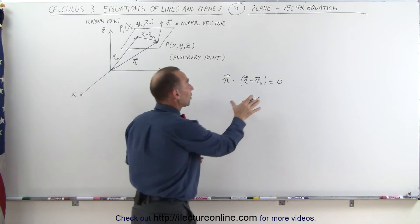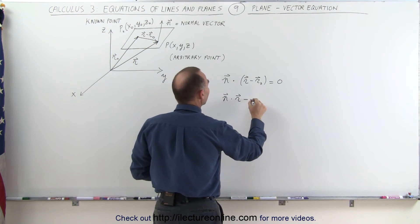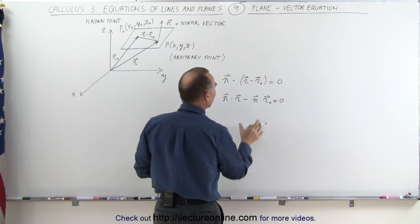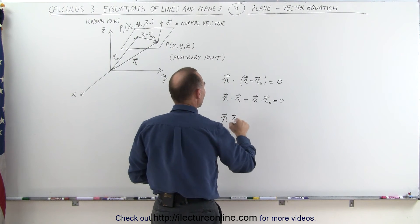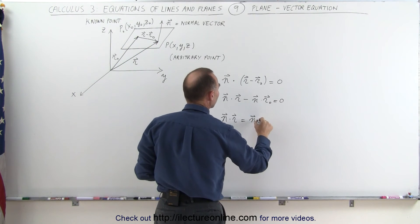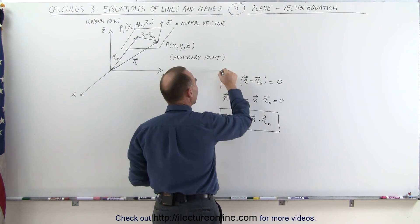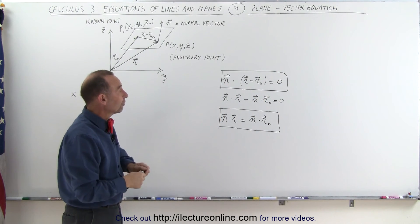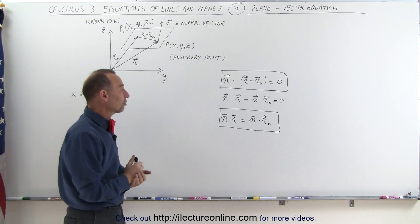I can also write this equation as follows: the normal vector dotted with R minus the normal vector dotted with R sub-naught equals zero. Moving the second term to the other side, I can write that the normal vector dotted with R equals the normal vector dotted with R sub-naught. In those two different formats, this represents the vector equation defining a plane in three-dimensional space.